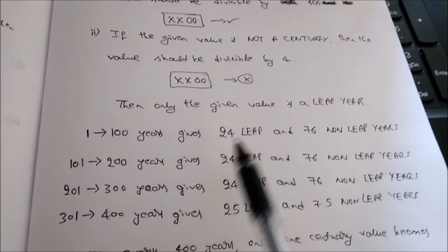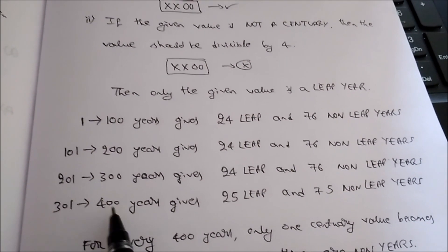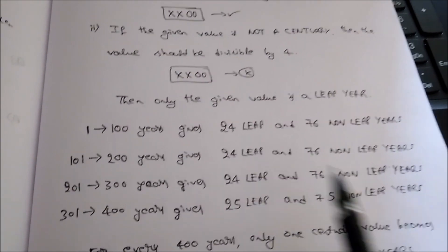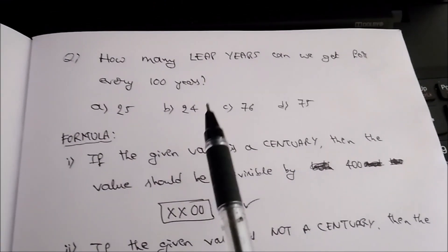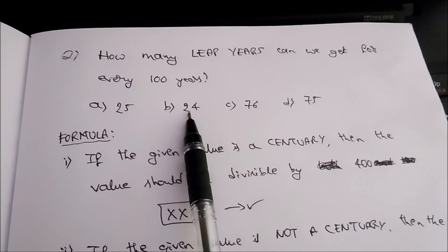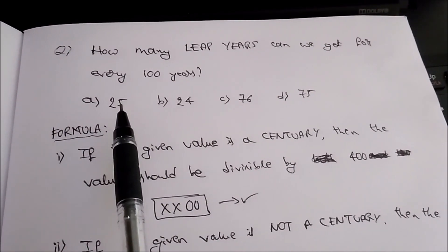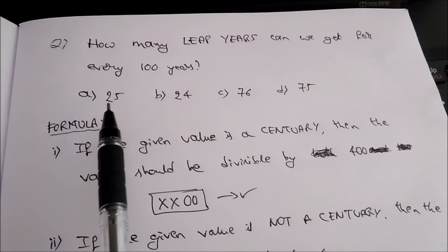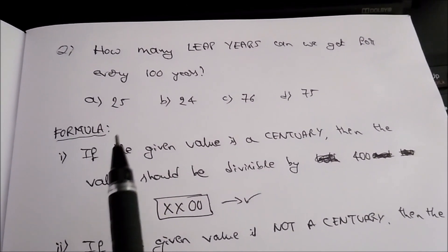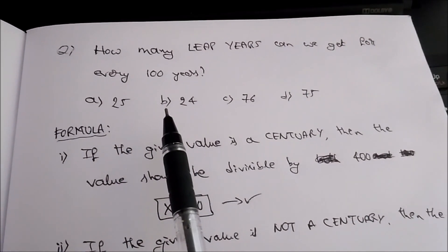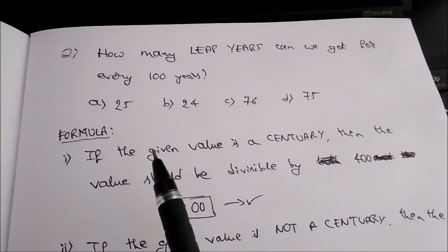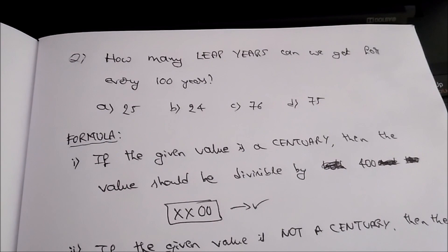400 is divisible by 400, hence it is a leap year, so we add it — giving 25 leap years and 75 non-leap years. This is how we solve a problem of this kind. Remember: in general, there will be 24 leap years for every 100 years. If the century value is a leap year, there will be 25 leap years and 75 non-leap years. If the century value is not a leap year, there will be 24 leap years and 76 non-leap years.